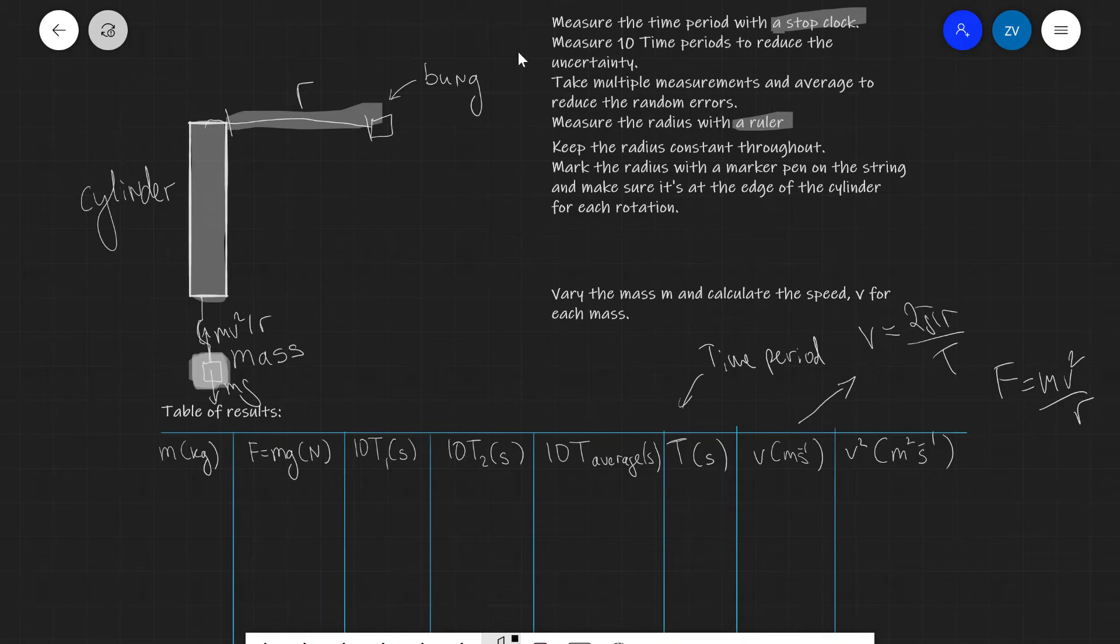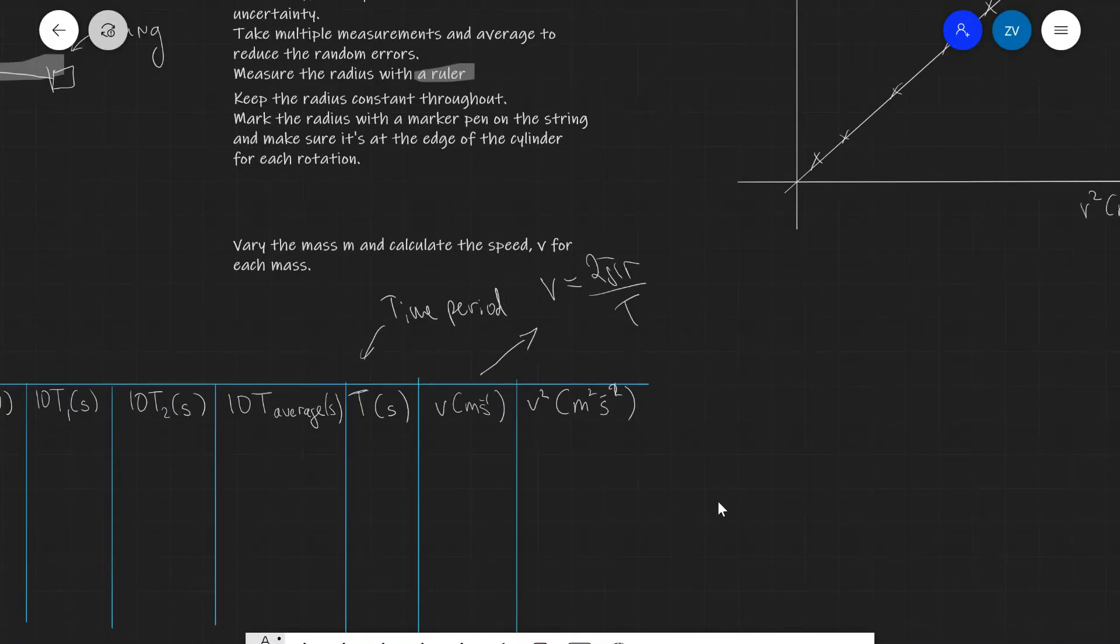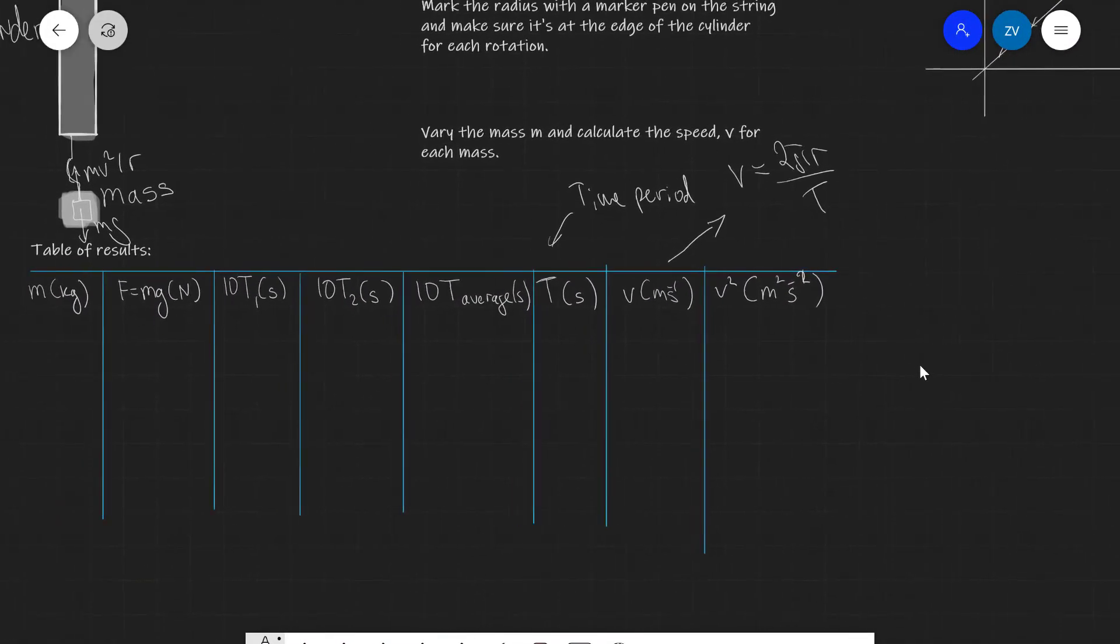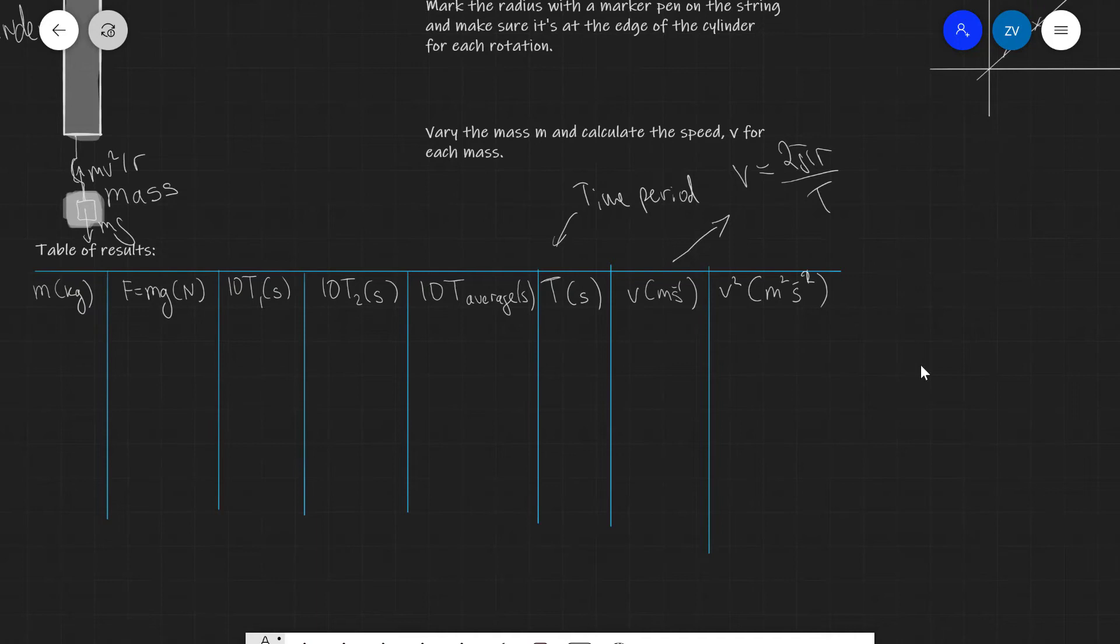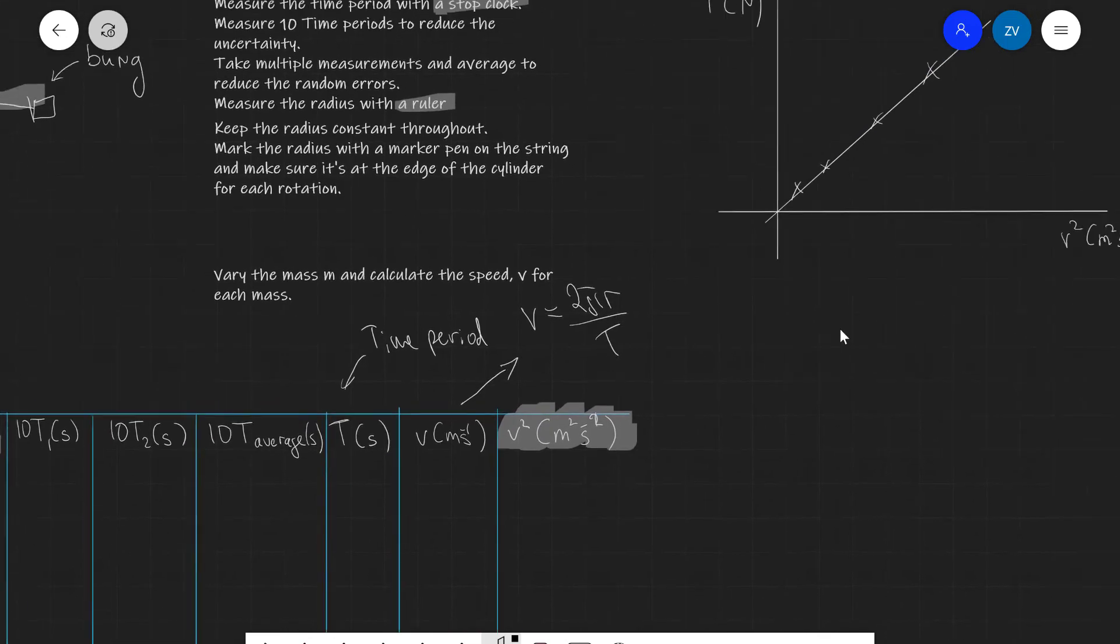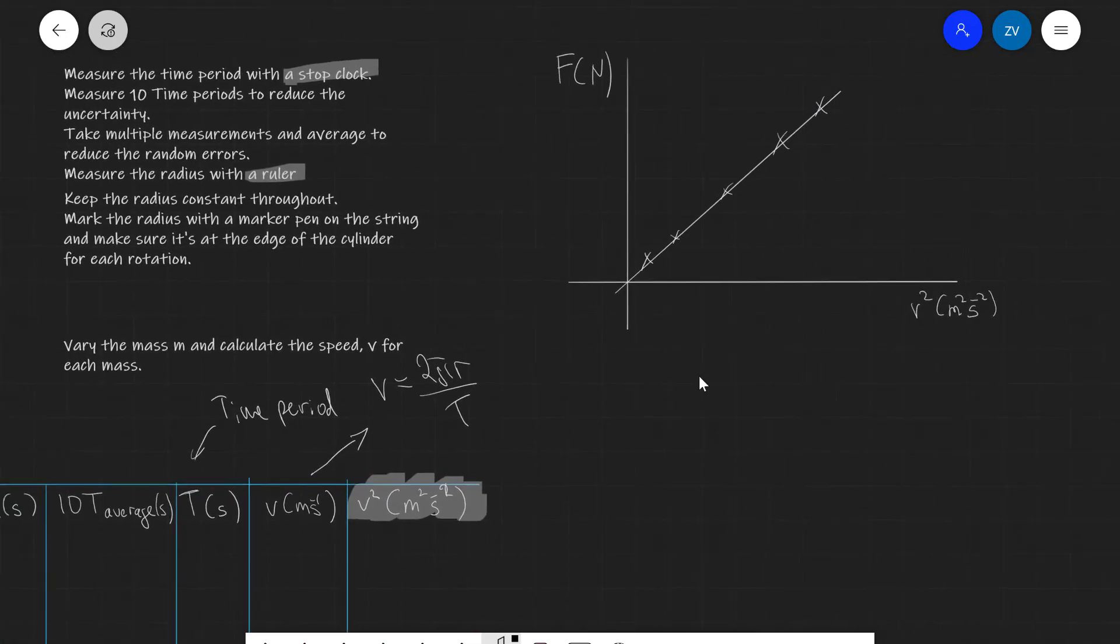After we've done this we're going to be plotting a graph. So after we have our data we're going to plot a graph of the force which is just simply mg and that's going to be on the y-axis. That's going to be against this column v squared which is going to be on the x-axis. If the relationship is correct we're expecting the graph to be a straight line through the origin.